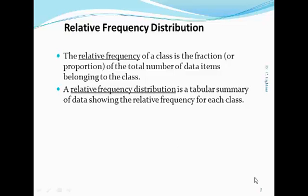The relative frequency for a class is the fraction or proportion of the total number of items in the data set that belongs to that class. A relative frequency distribution is a tabular summary of data showing the relative frequency for each class.